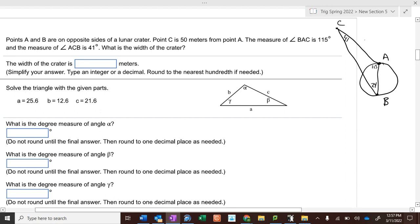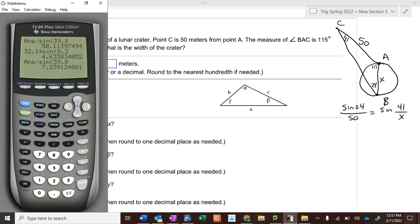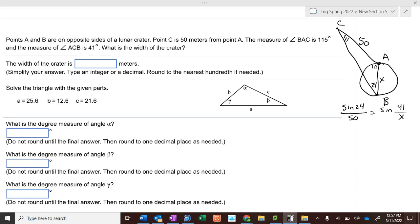All right, c is 50 meters from a. We're figuring out how far this is, so we say the sine of 24 over 50 equals the sine of 41 over x. So 50 times the sine of 41 divided by the sine of 24 is 80.6.